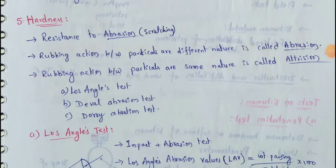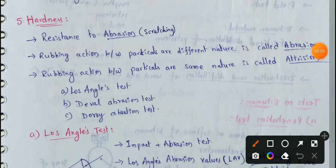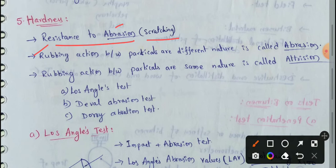Next topic: Aggregate Hardness Test. The resistance to abrasion is known as hardness. Abrasion means scratching. The rubbing action between particles of different nature is called abrasion.